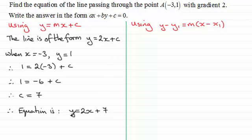but we need to now rearrange it into this format. So I'm going to just subtract y from both sides. So if we do that, we therefore have 2x minus y plus 7, and that equals 0.